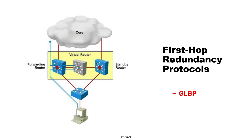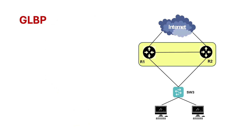Hello everyone. In this session of the CCNP Encore series, I will discuss another type of FHRP — that is GLBP, also known as Gateway Load Balancing Protocol, which is a Cisco proprietary protocol.